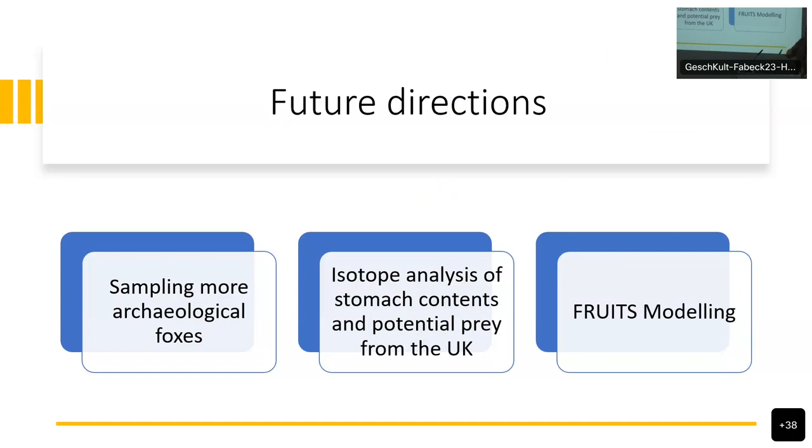We are now done sampling the modern and the 1970s foxes. But the archaeological foxes, we really need them. We've got stomach contents for the modern foxes. We are also doing isotope analysis of those stomach contents and the isotope analysis of the potential prey. But this will only work for the modern foxes. I'm not yet sure what to do with the 1970s foxes. If anyone can advise me on how to solve that, that would be great. For the archaeological foxes, usually we get the prey species within the sites when you get the samples. We are going to do FRUITS modeling at the end, when we have all the results.